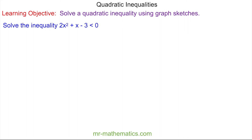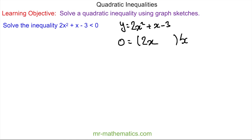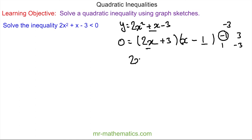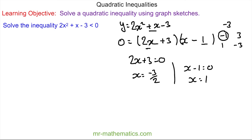Do you want to try and solve this inequality? You can pause the video and resume when you're ready. So again we'll sketch a graph of y is equal to two x squared plus x minus three. It's a little bit more complicated to solve for zero, but we'll have two x in one bracket and x in the other. We need two numbers that multiply to make negative three — one of them is doubled — so we can have negative one and three, or one and negative three. If we double the negative one to make negative two and then add the three, we get the positive x. So we can find our roots when each bracket equals zero: x will equal negative three over two.